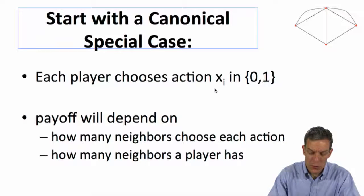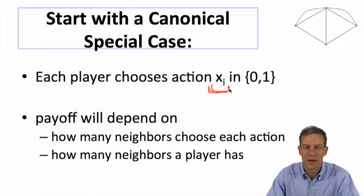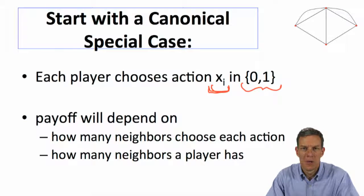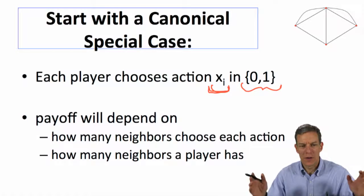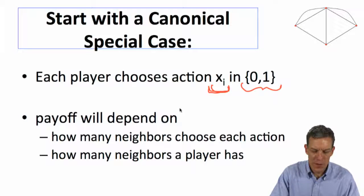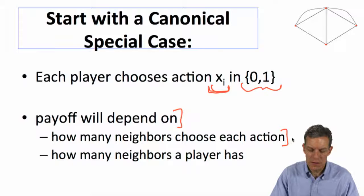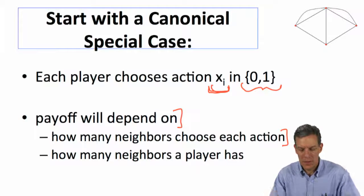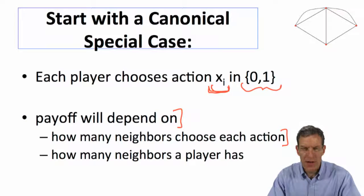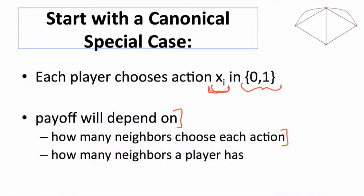What is true is we're looking at a situation where person i is going to take an action. Let's let that be x_i, and we'll start with the case where it's just a binary action - either zero or one. I either buy this book or I don't buy the book, or I invest in a new technology or I don't, I learn a language or I don't learn a language, I end up going to a movie or I don't go to the movie. And the payoff is going to depend on how many neighbors choose each action. So how many people choose action zero, how many neighbors choose action one, and how many neighbors I have. So my payoff is going to depend on those things.